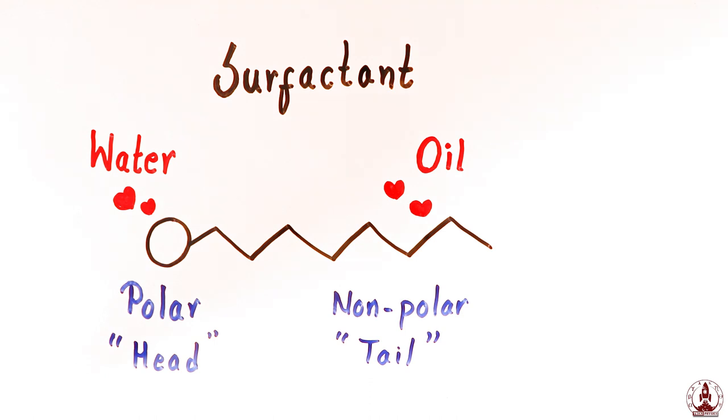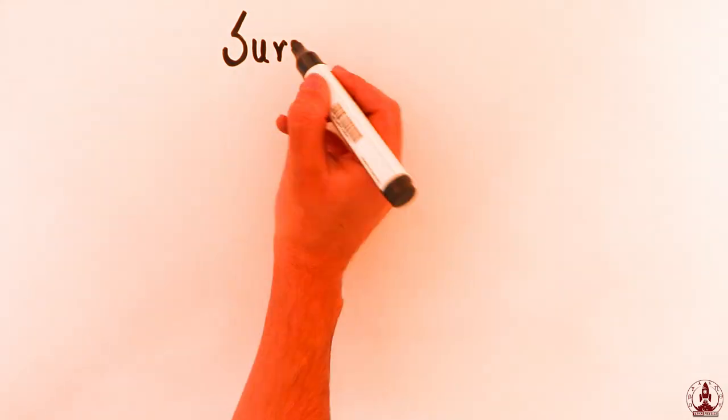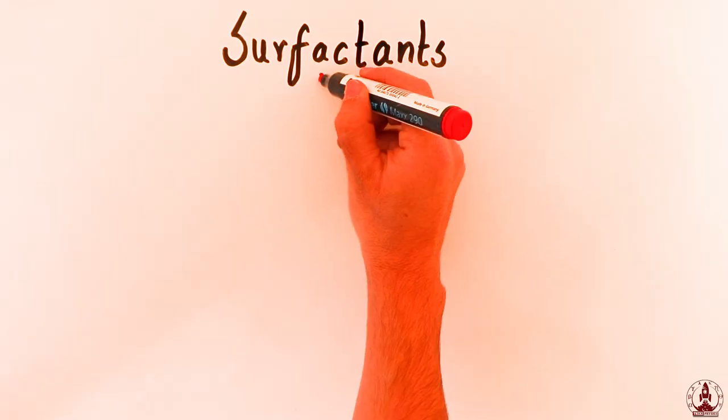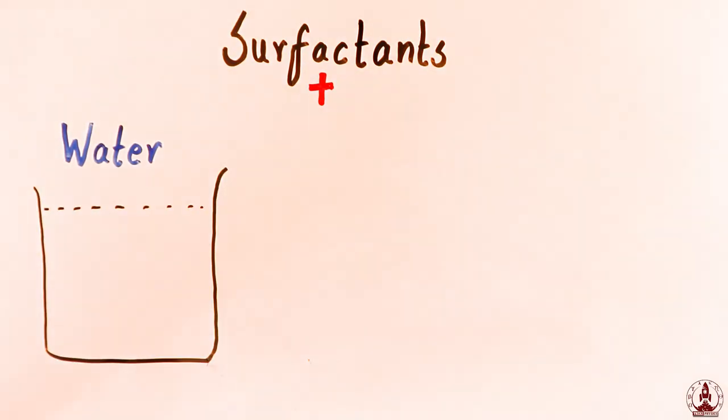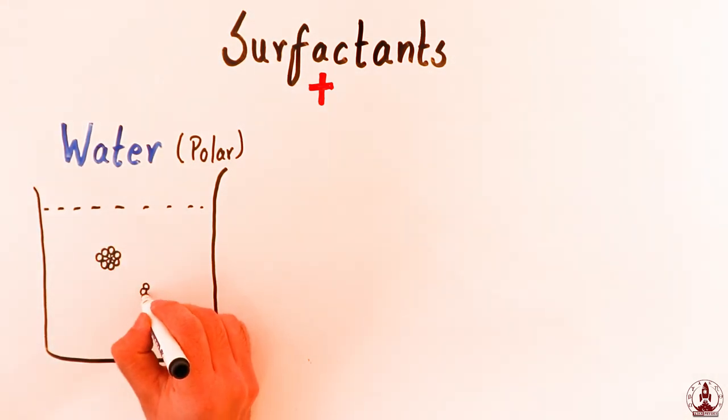The real fun begins now. What happens if you put some surfactant molecules in water? Remember, water is polar by nature. So the surfactants in water will crumble together in such a way that water-loving heads will face the water and water-hating tails will hide by aggregating together.